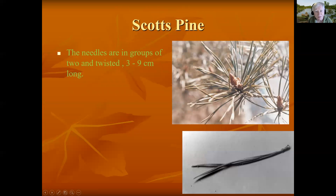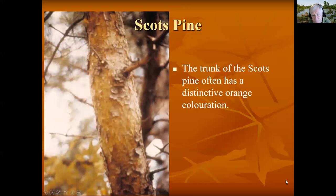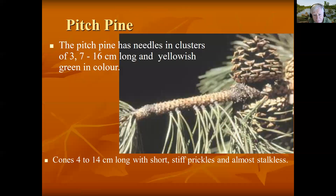Scots pine has needles in groups of two that are twisted and three to nine centimeters long. You can see the twists clearly here. Scots pine often has orange bark, but like all things in nature, it doesn't always show that way.